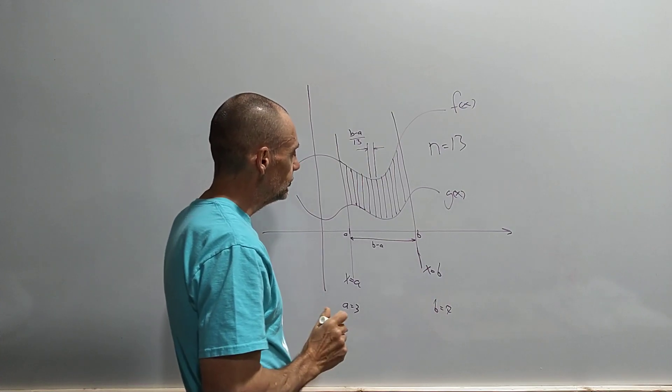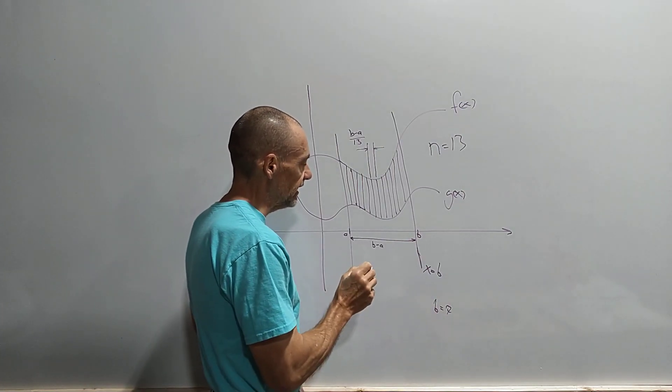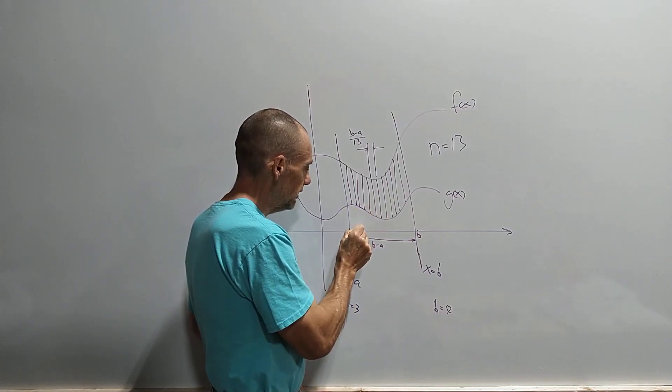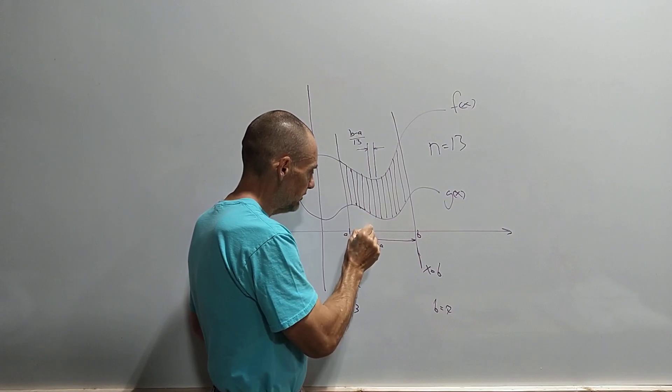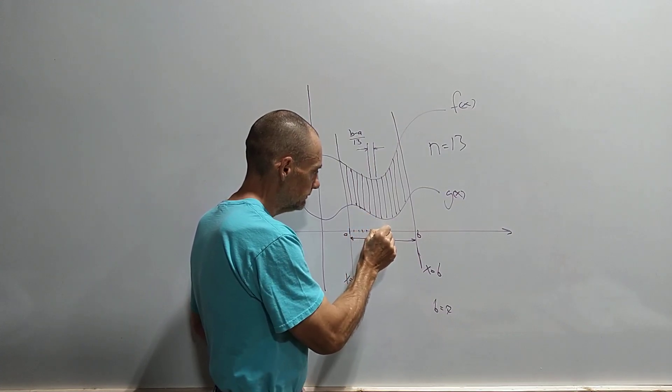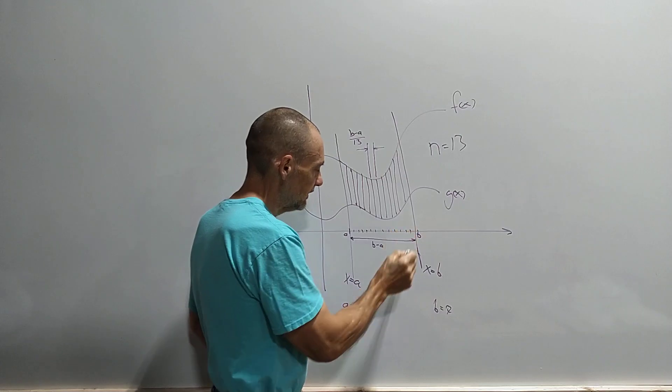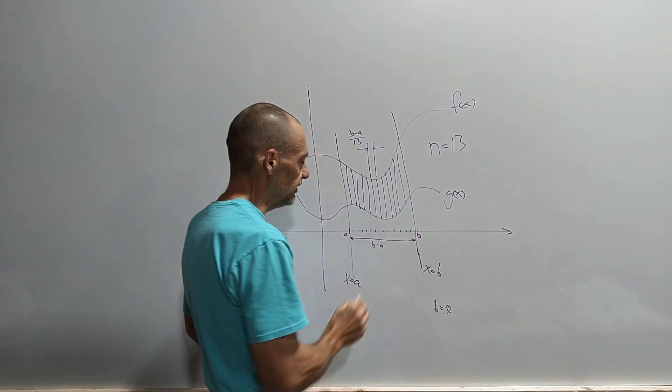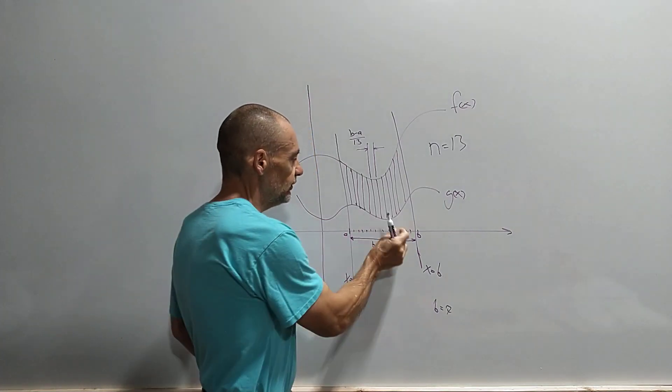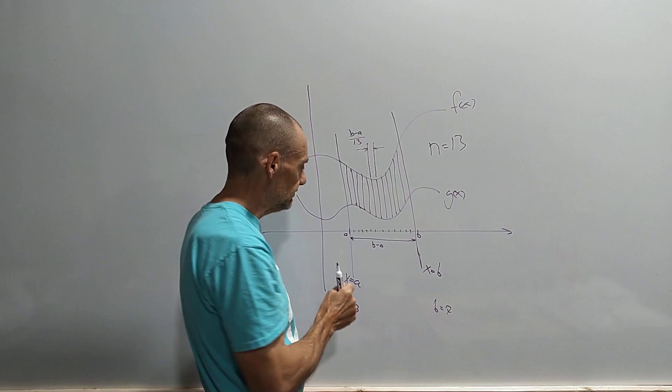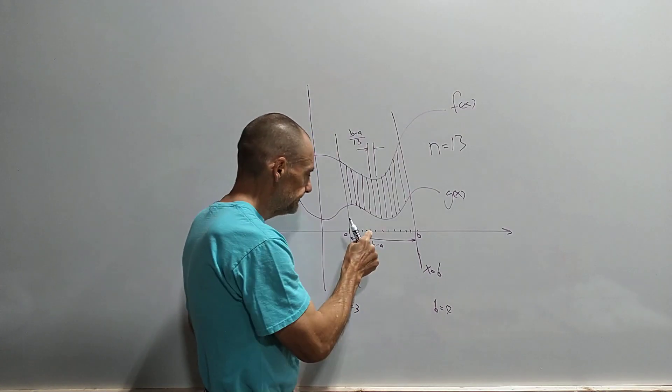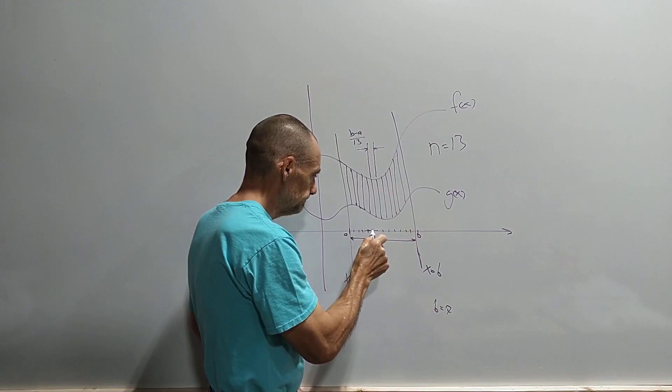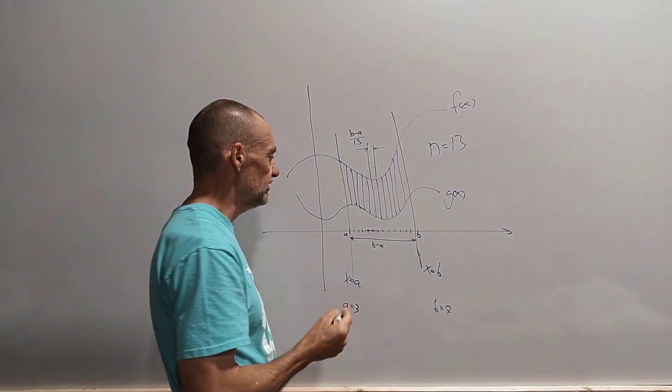Now we also need to understand that in each one of these little intervals here, so let's say that each one of these things here - one, two, three, four, five, six, seven, eight, nine, ten, eleven, twelve, thirteen - these are the widths of these rectangles. They're all supposed to be exactly the same size.